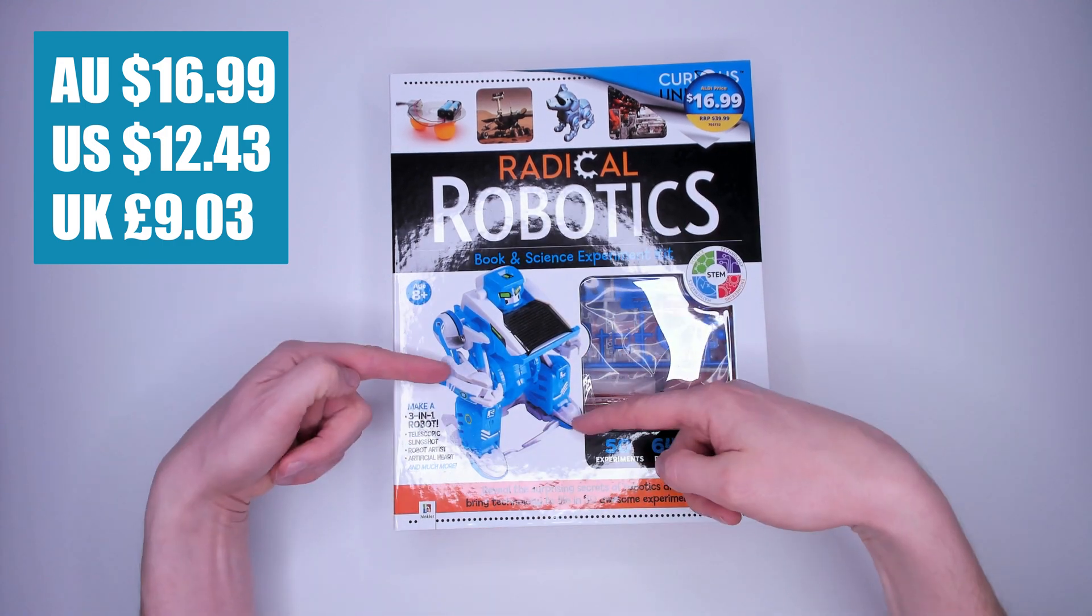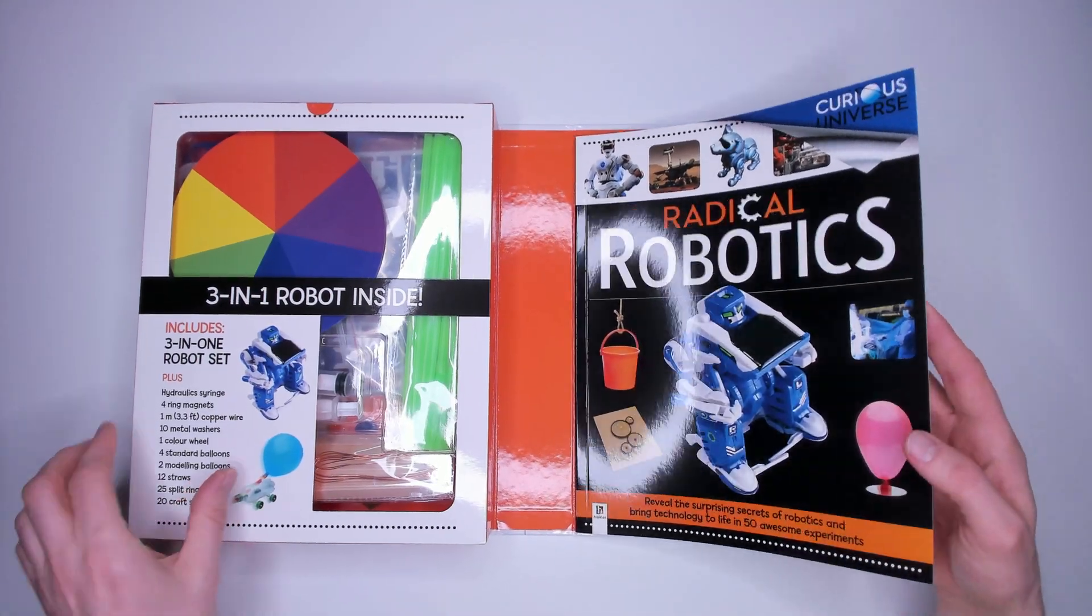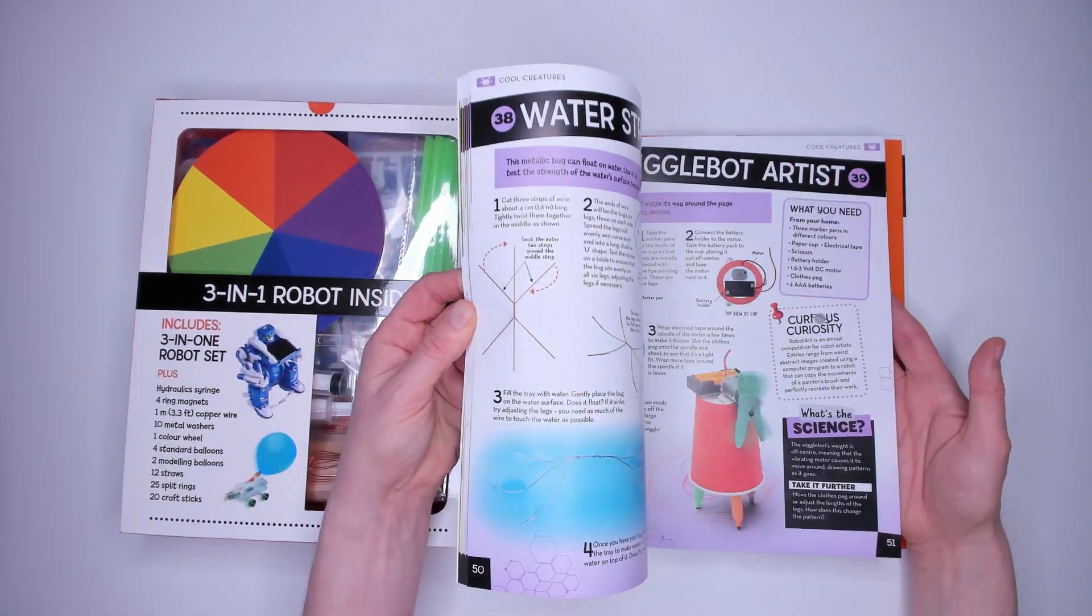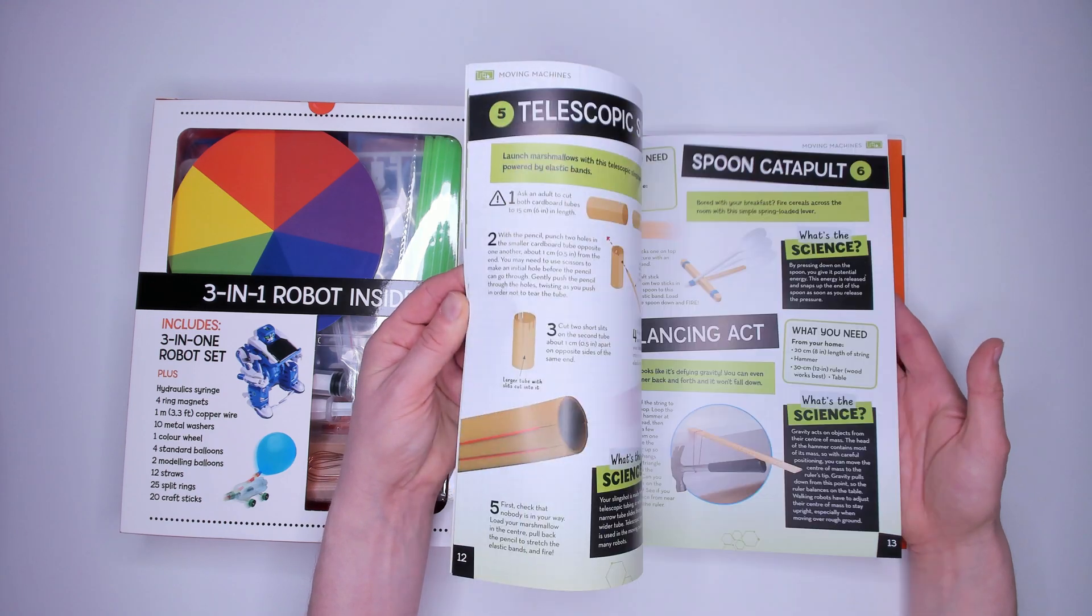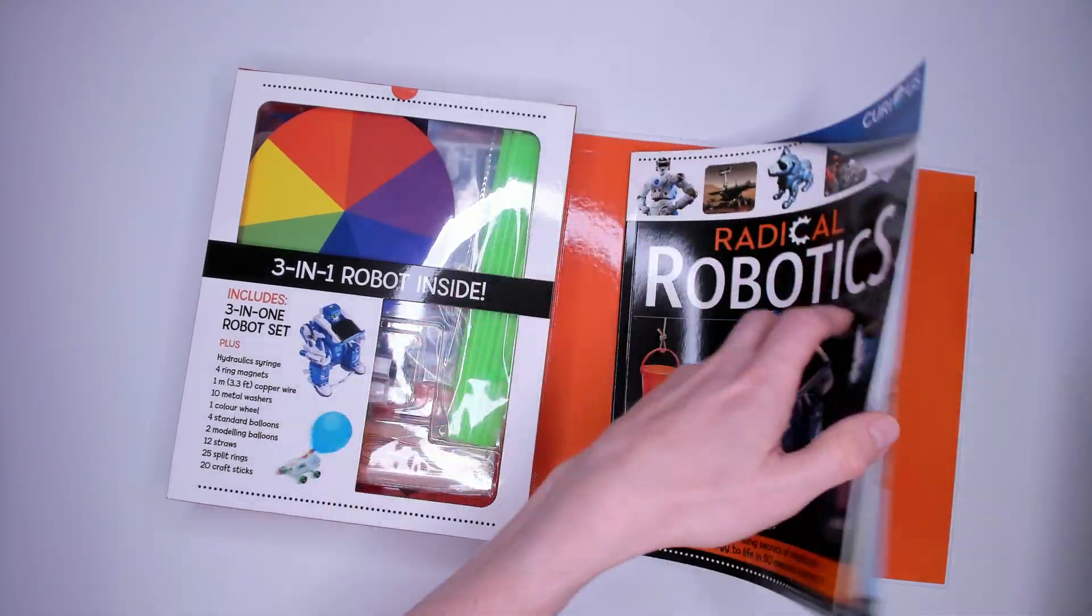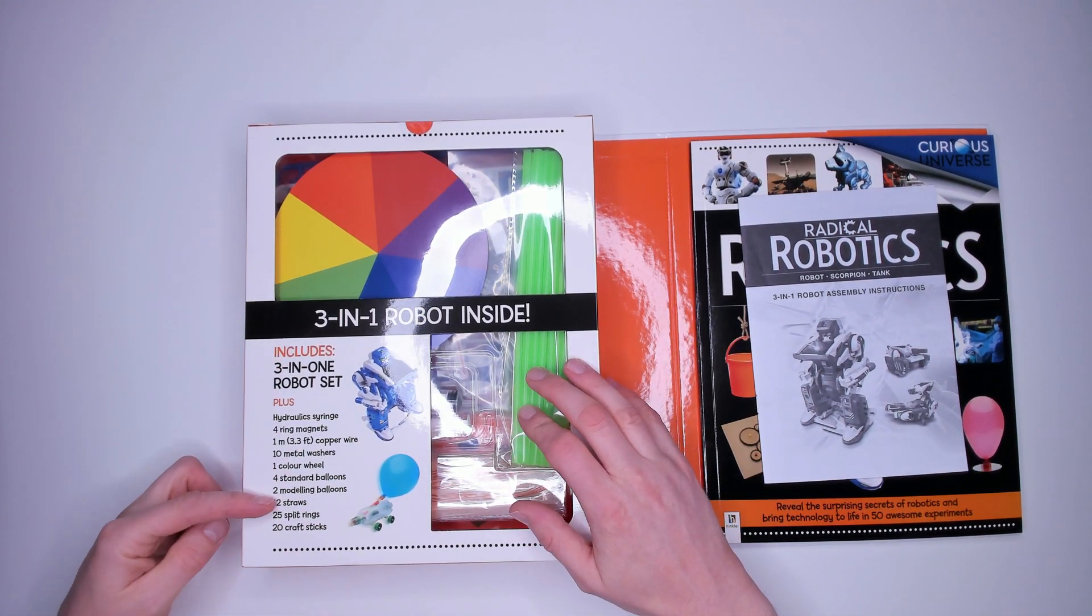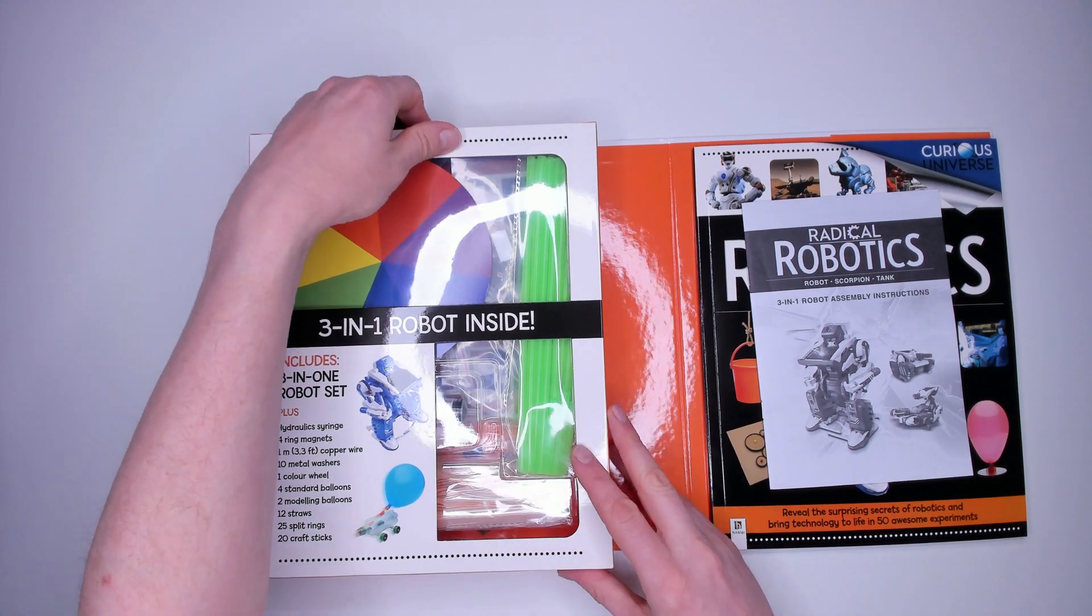As usual I'm going to try something from the kit out, today it's this robot here. Open it up, and inside is this activity book, which has 50 experiments inside, and this leaflet here must be the instructions for building the robot. You get a better view of what's inside through this window, looks pretty colorful. Let's open it up and take a look.